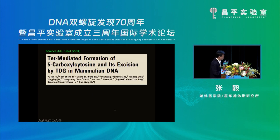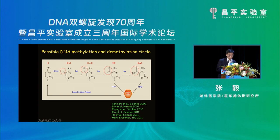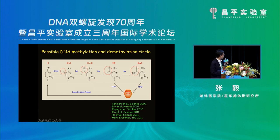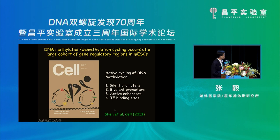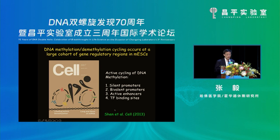Cornell's group, around the same time, also showed that TET protein can generate carboxylcytosine, and that TDG can get rid of the carboxyl. Based on Angela's work, our work, and Cornell's work, we can generate the cyclic methylation-demethylation circle: DNMT puts the methyl group, TET protein oxidizes it generating different oxidative states, then TDG cleaves formylcytosine and carboxylcytosine through base excision repair. In ES cells, we demonstrated this cycle happens and mainly occurs at transcription regulatory elements.